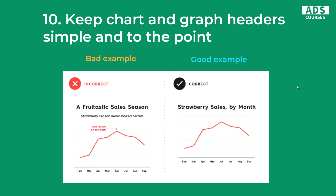The last one, number 10, is to keep chart and graph headers simple and to the point. You should use titles, but they should be really to the point and as simple as they could be. You should not use static text over your charts because you need to actually change them every time you generate the report — your titles should be as simple as possible. Even this good example, 'Strawberry Sales by Month,' could be even better — you could go with 'Strawberry Sales,' or even better, 'Strawberry Revenue' or 'Strawberry Transactions,' which would be more clear. Again, simple is better.